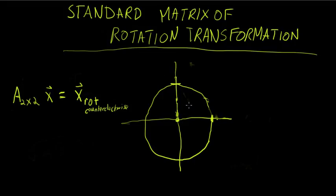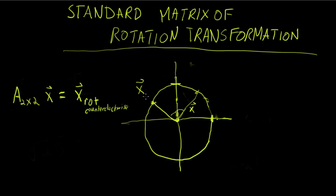In this video we're going to be going over the standard matrix of the rotation transformation. It turns out that there's a 2 by 2 matrix A, which if you multiply by the vector x in R2, your result will be a new vector x prime, or x sub-rot, which will be the original vector x rotated counter-clockwise by angle theta. In this video we're going to figure out what this particular matrix A is.